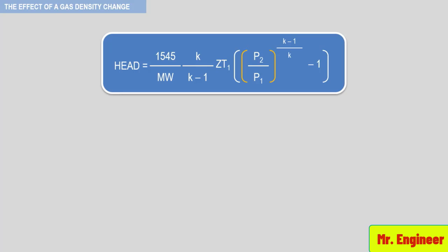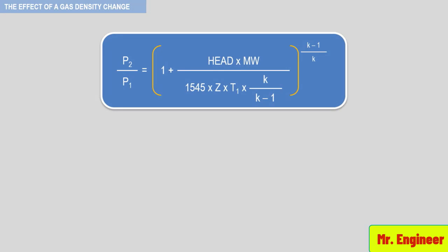The pressure ratio produced by a dynamic compressor is heavily affected by gas density. Here you can see the relationship used to determine the head required to increase the pressure of a gas. For a given compressor flow and speed, the head produced by a dynamic compressor is essentially constant. Rearranging this equation gives the formula for the pressure ratio. It becomes clear that since the head is fixed for a given compressor flow and shaft speed, any change in the molecular weight, the gas inlet temperature, the specific heat ratio, or compressibility will change the pressure ratio produced.